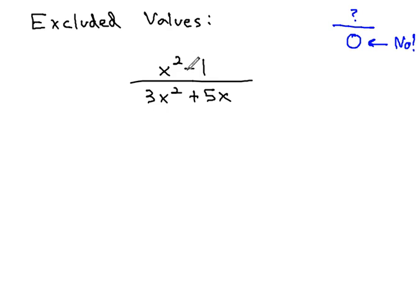So when we're asked to find the excluded values of this fraction, we don't really care about the numerator. What we really care about is the denominator, 3x squared plus 5x, cannot be equal to 0.